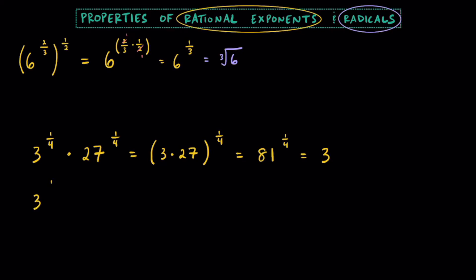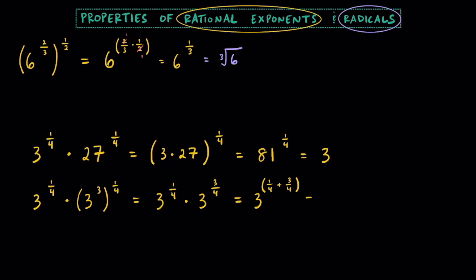Just to help you get a really solid understanding of how we can manipulate some of these rational exponents, we can rewrite this 27 as 3 cubed. And we can go ahead and raise that to the 1 fourth power. So we can keep this 3 to the 1 fourth power in front, and then use the power of a power property: 3 times a 4th is going to be 3 to the 3 fourths power. Now that we have the same bases, we can add their exponents: 3 to the 1 fourth plus 3 fourths power. That's going to be 3 to the first power because 1 fourth plus 3 fourths is one whole, and that's just going to be 3.